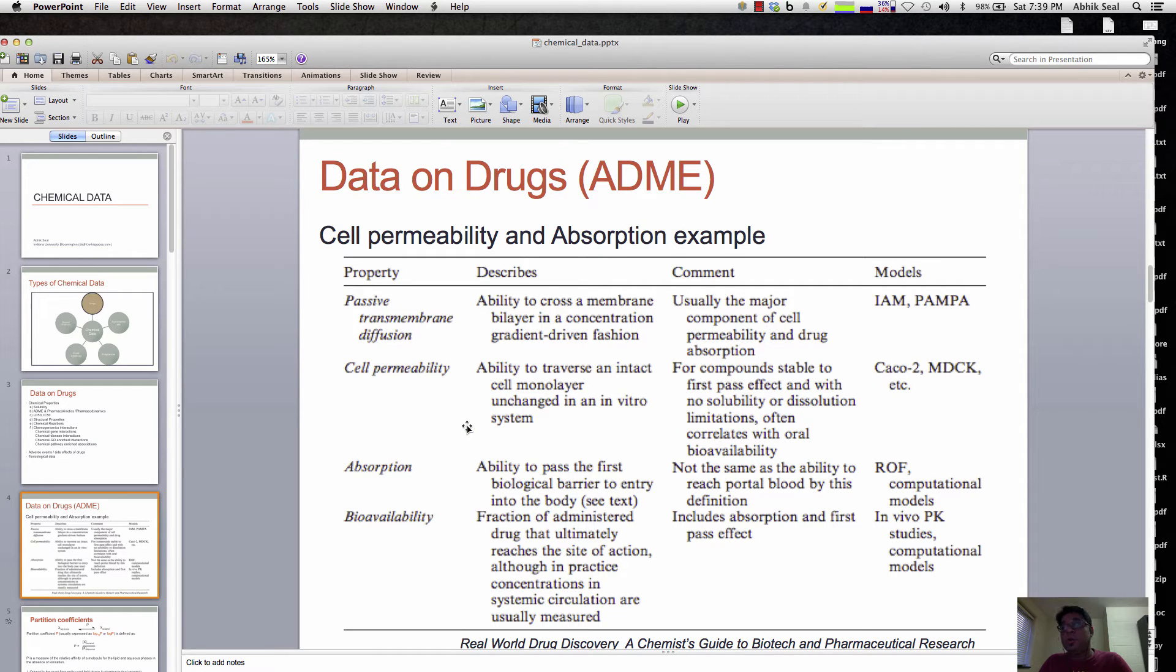There are other properties like absorption, which we model by Lipinski's rule of five and other computational models, and bioavailability where the drug reaches the site of action, which we model by pharmacokinetic studies. These are different examples: in ADME, if you want to study how the drug is absorbed, distributed, metabolized, and excreted, we model these kinds of properties using various models.